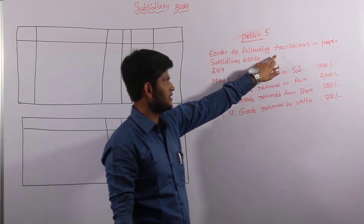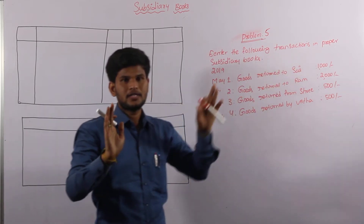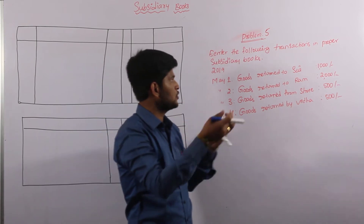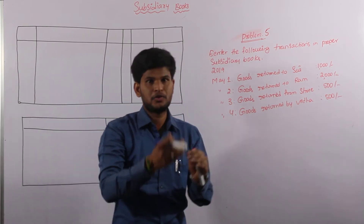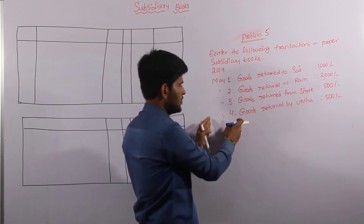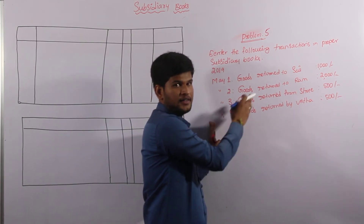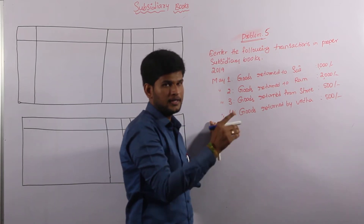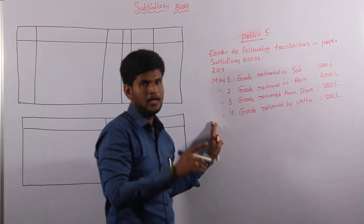The examiner has not clearly mentioned which subsidiary books to prepare. He is asking us to prepare proper subsidiary books based on the number of transactions. Based on these three or four transactions, we have to identify which type of subsidiary books we are going to prepare. That is most important when we read the problem.